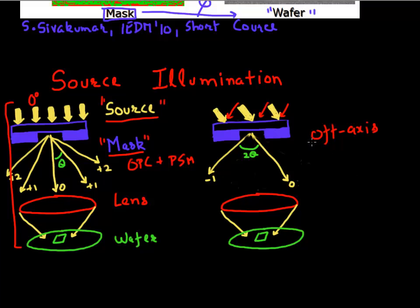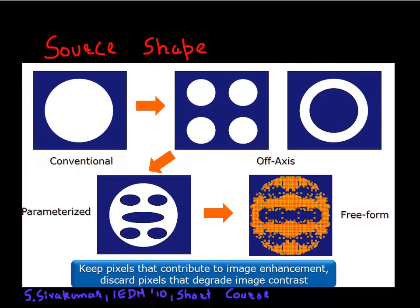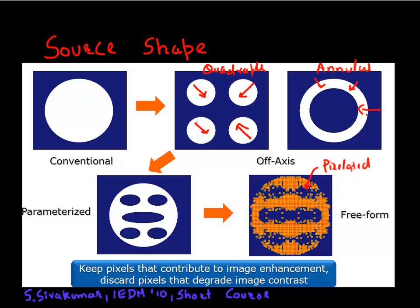The other thing we can do on the source side is play with the shape of the source. A conventional source has just one hole, but your source could have multiple holes, each targeting light at a different angle — a quadrupole illumination, or an annular ring-like illumination with light coming from all angles. More recently, people have made this a pixelated light source where you can turn on and off individual pixels, each controlling light from different directions. All of this helps in improving your image quality.